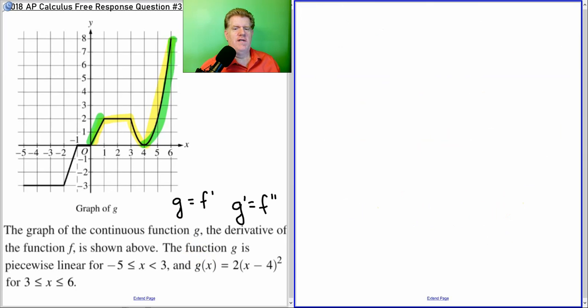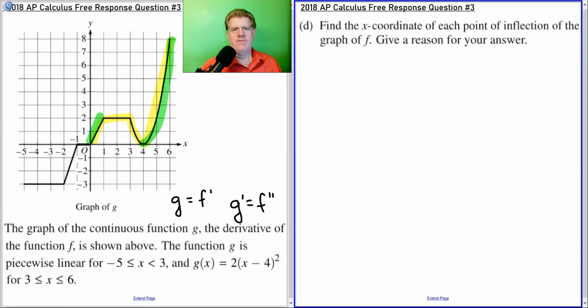One more problem. Now, see the pace we're working at? In the old AP formats, you would probably use about 15 minutes per free response question. So, on a new format, I don't know what it's going to be like. But, if you can time yourself that way, you're probably at a very good pace. Now, we want points of inflection.